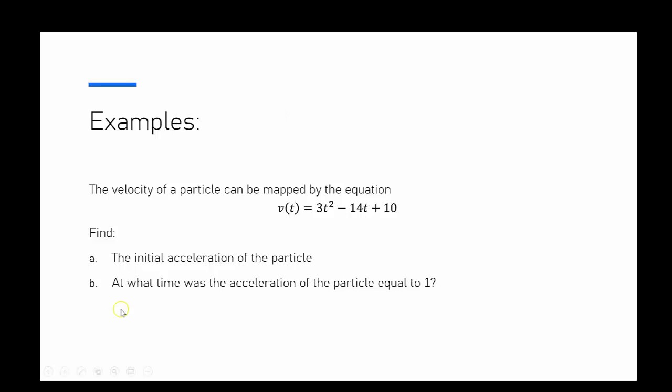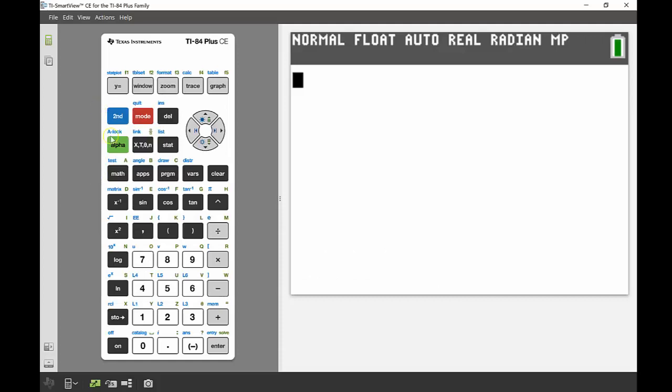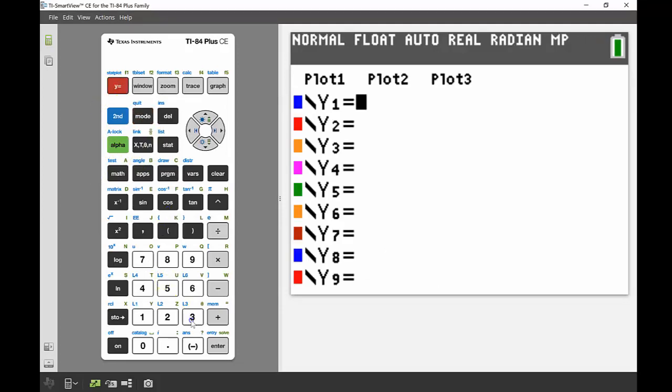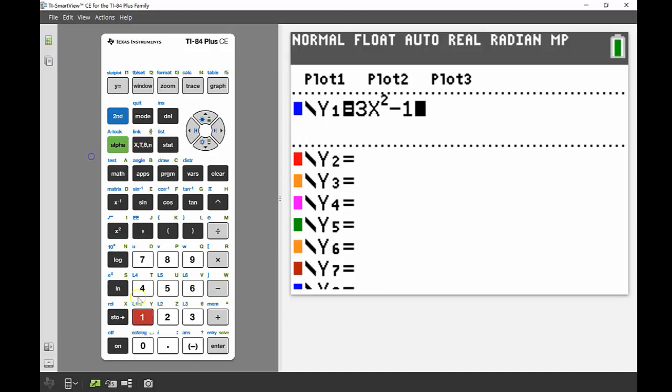So I'm just going to bring up my calculator and enter my equation into y1. So 3, now in our situation our variable is time but we can just interchange that with our x variable that we graph with. I'm going to quit out of my function editor, so second and mode to quit.